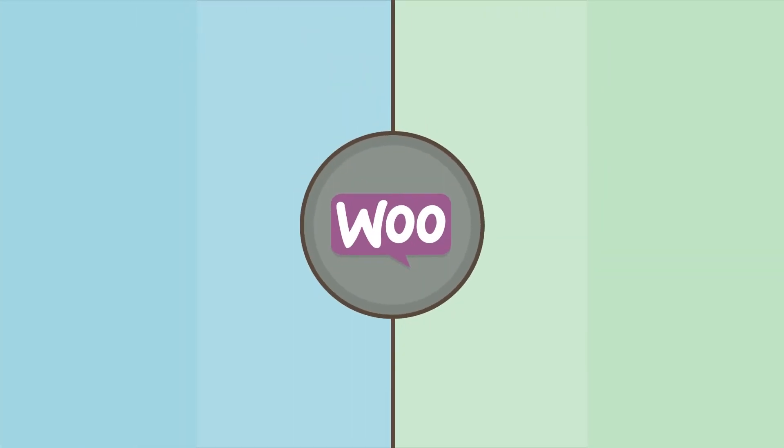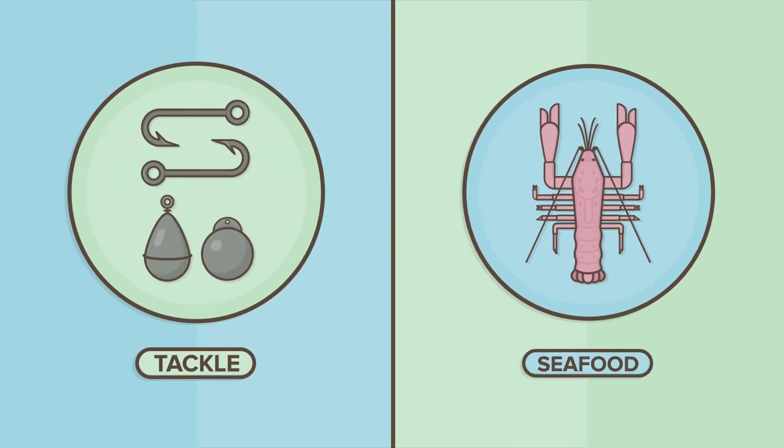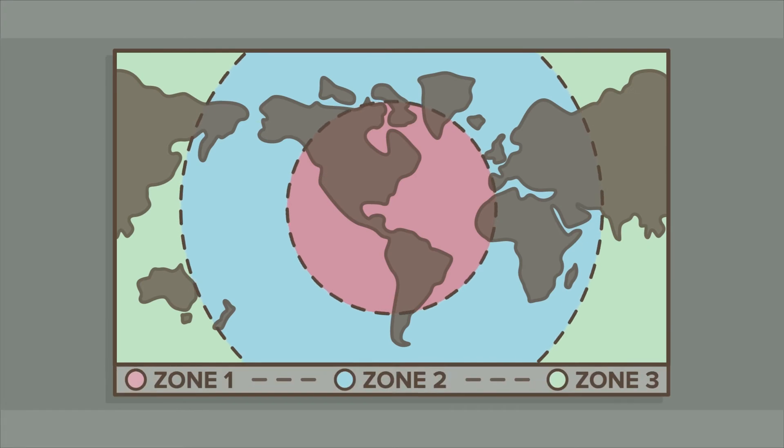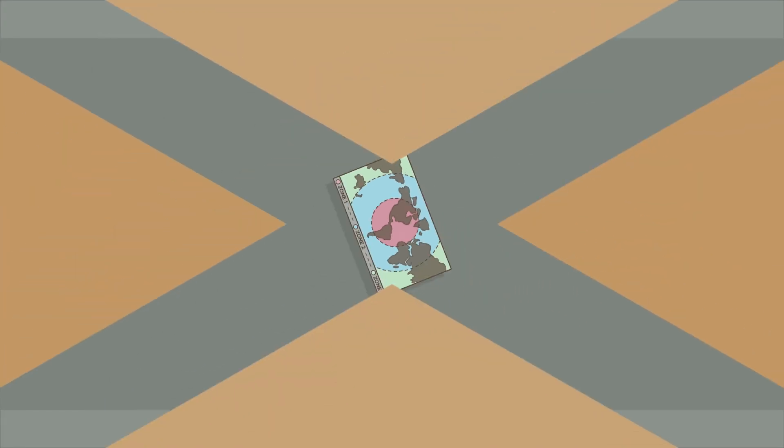Here's how you'd do it. First, in WooCommerce, you'd give your fishing tackle and seafood different shipping classes, and divide your customers' locations into different shipping zones.